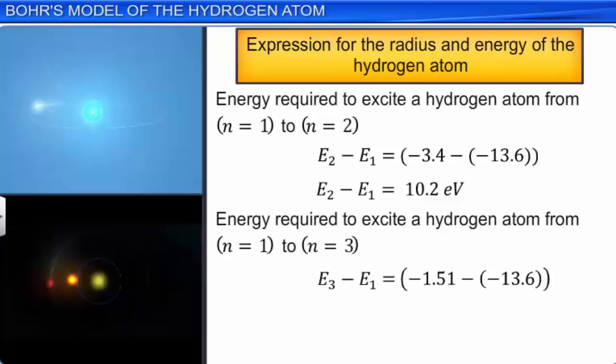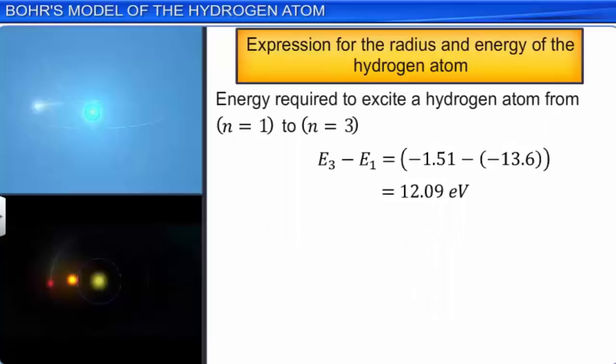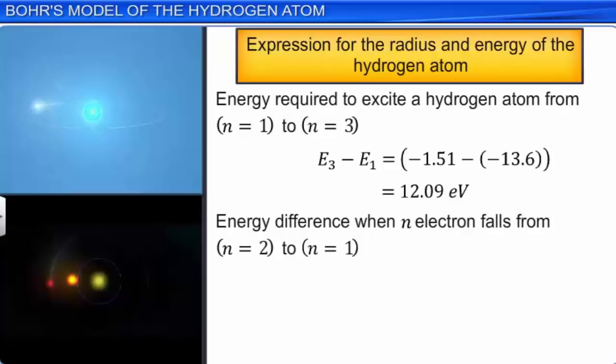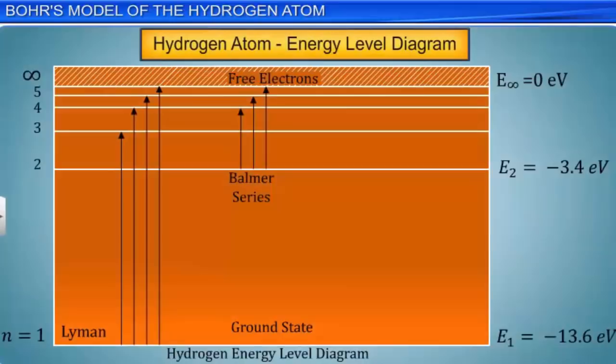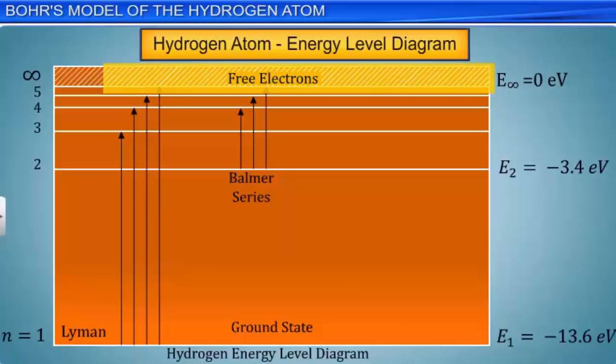When the electron falls from the excited state to its ground state, it emits a photon whose energy is equal to the energy difference between the excited state and the ground state. For example, if the electron comes to its ground state from the first excited state, the energy difference E₂ − E₁ = 10.2 eV, and thus a photon of energy 10.2 eV will be emitted. We can observe the various energy states of hydrogen atom in the form of an energy level diagram.